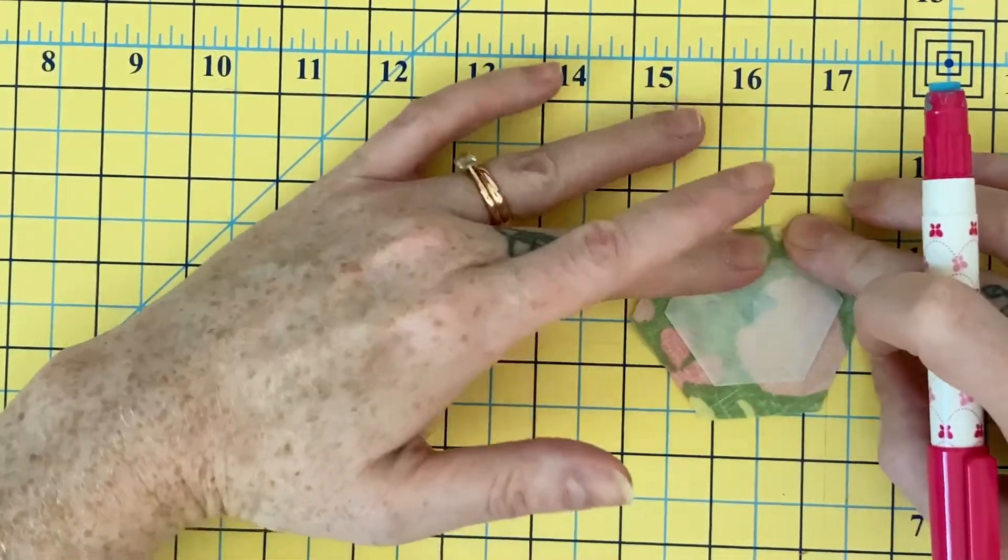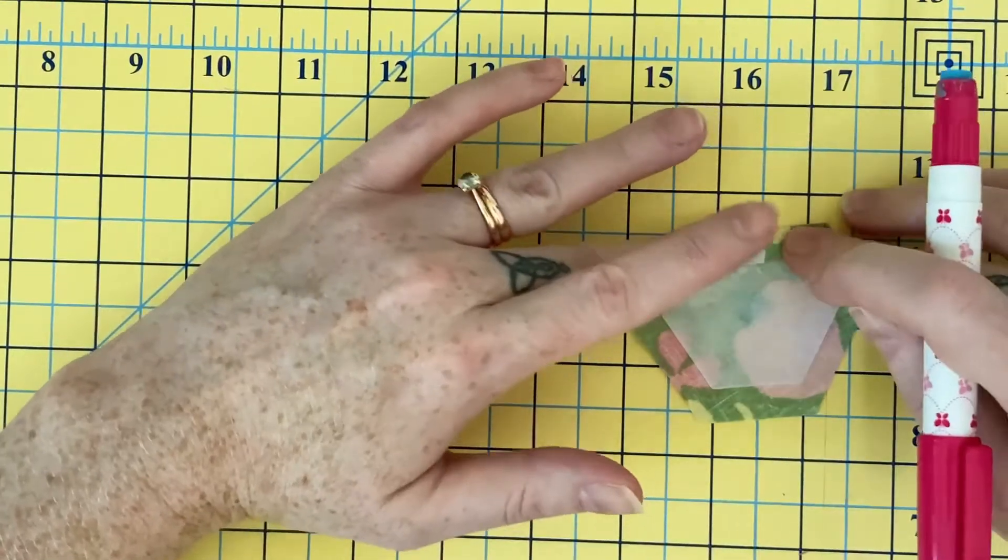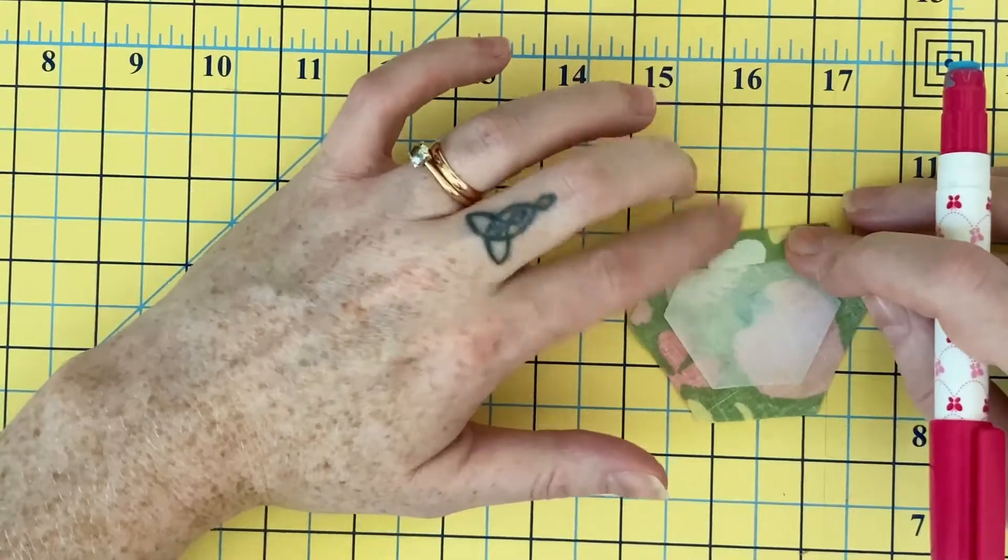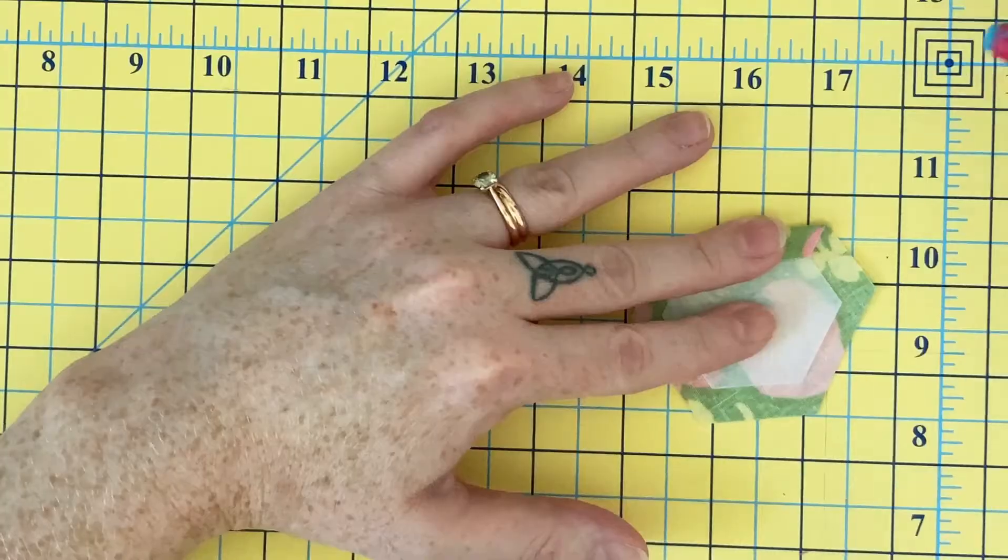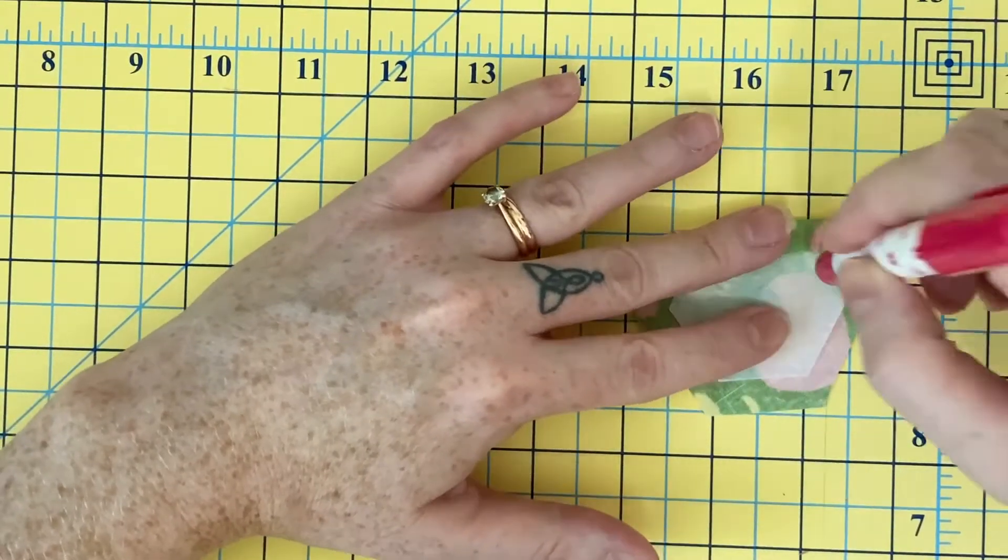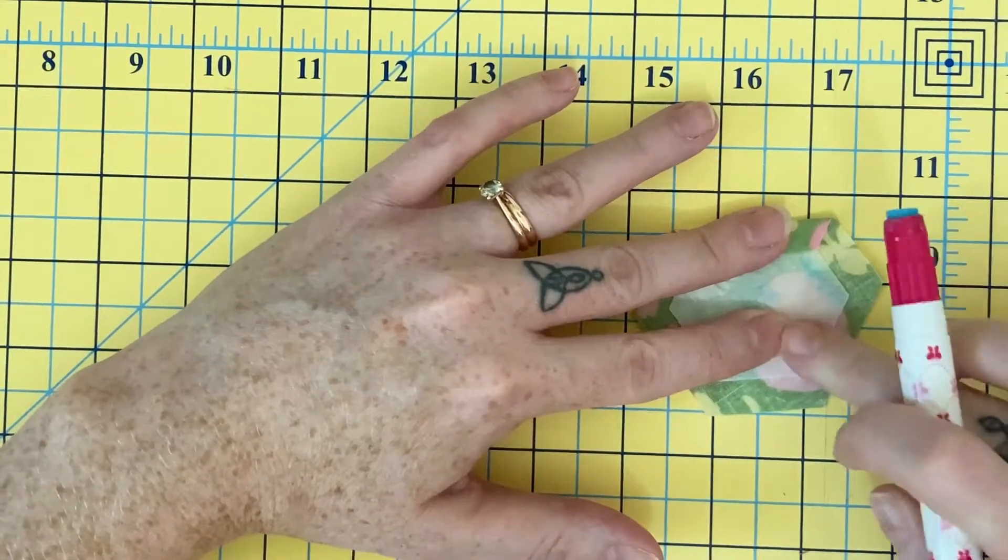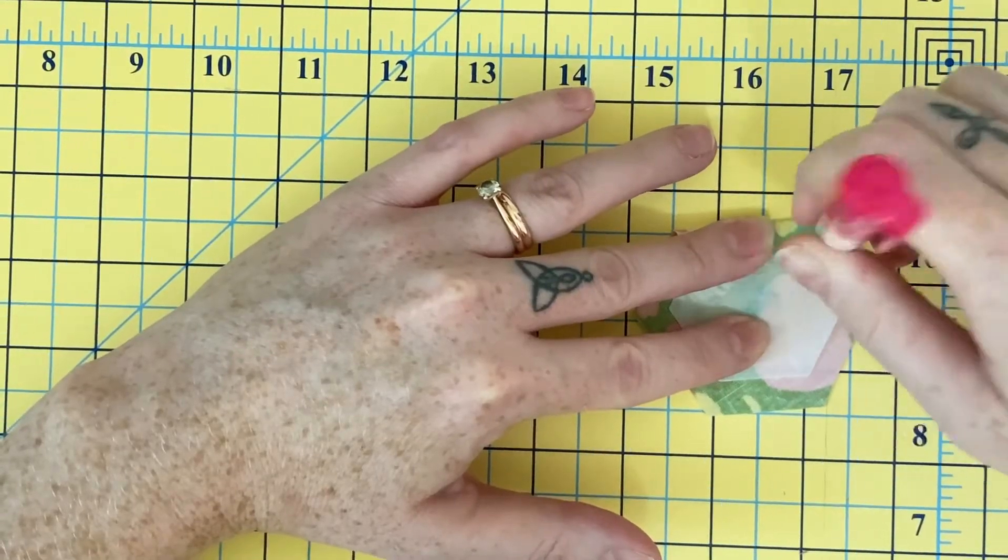So all we're going to do is continue gluing and holding it down, especially because this is a bit of a thicker fabric. So it's going to need some extra help to stay glued. But instead of just putting it on the template, I'm going to put a little bit here.